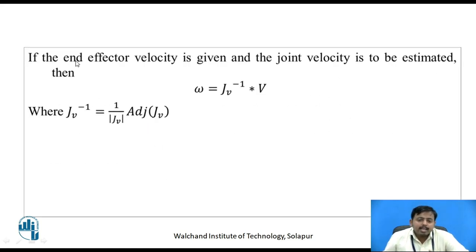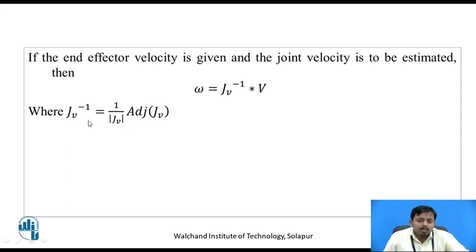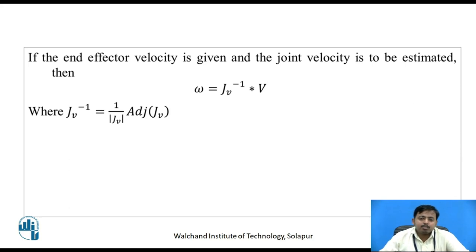If the end effector velocity is given and we need to find joint velocities, we calculate the inverse of the Jacobian matrix, Jv_inverse = (1 / det(Jv)) * adj(Jv). If the determinant of Jv equals zero, the configuration is called singular — the robot loses some degrees of freedom. To avoid singularity, we must ensure the determinant does not come close to zero.